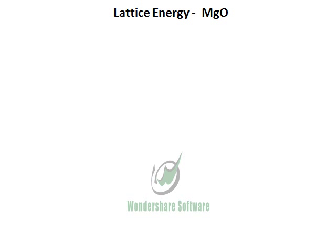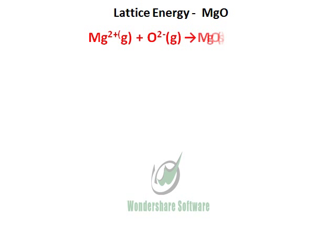Let's do the lattice energy of magnesium oxide. Lattice energy is the energy released when one mole of an ionic substance is formed from its ions. In this case, from magnesium ions and oxide ions, we get magnesium oxide solid.